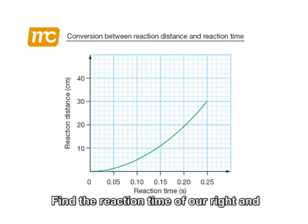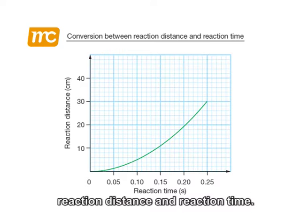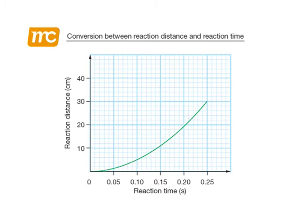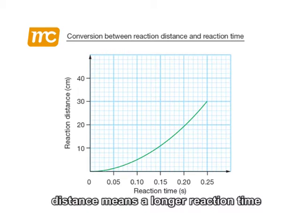Find the reaction time of our right and left hands using the conversion graph of reaction distance and reaction time. From the graph, we can know that a greater reaction distance means a longer reaction time.